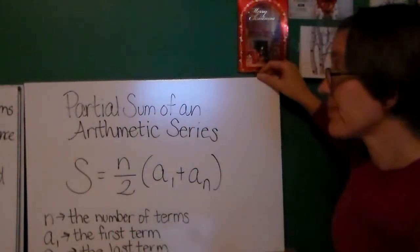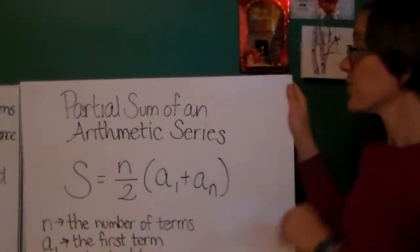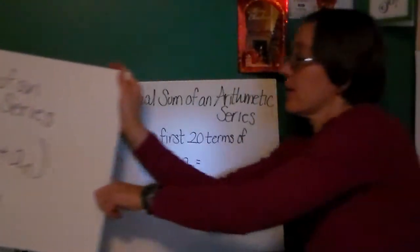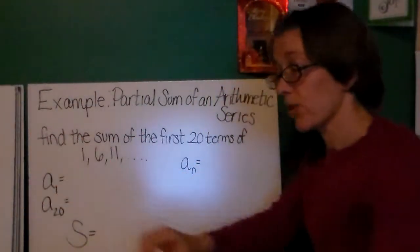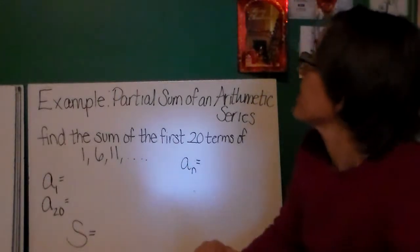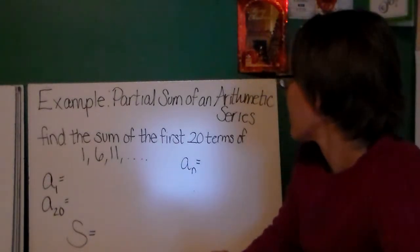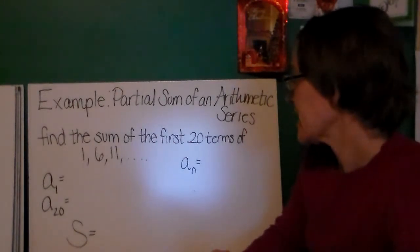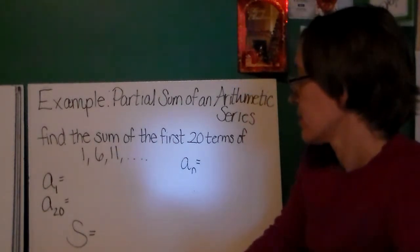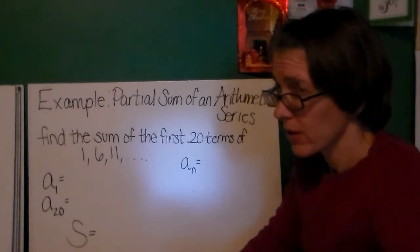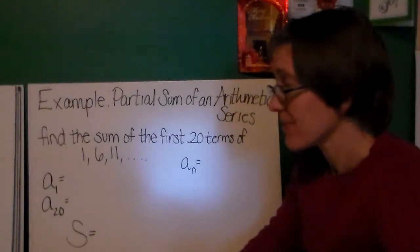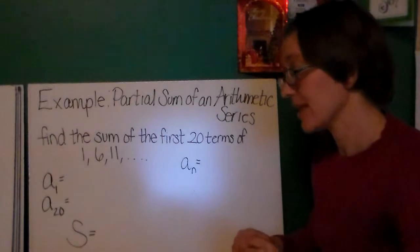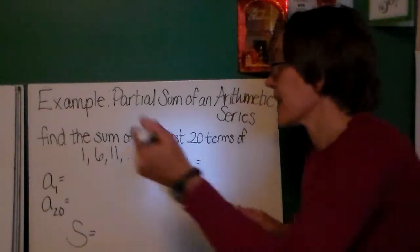So, we're going to use this formula in two problems. And one of them is a word problem. I'm so excited. Okay, here's our example. Partial sum of an arithmetic series. Find the sum of the first 20 terms of 1, 6, 11. Sometimes they give you the first and last. Sometimes they don't. This time, we didn't get that.